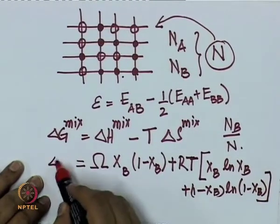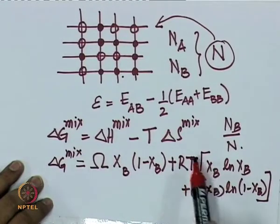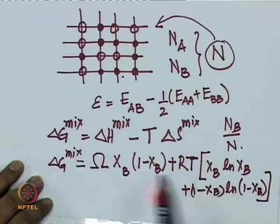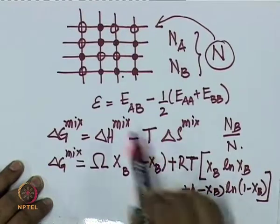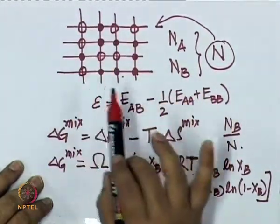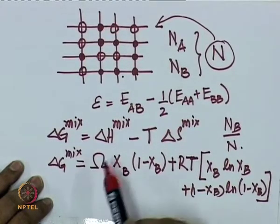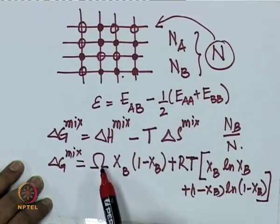From this expression we argued that at higher temperatures, when the temperature-dependent term is dominant, the enthalpy of mixing doesn't play a key role. The system chooses a configuration dominated by entropy, and because entropy prefers random distribution, you form a random solid solution. At higher temperatures, irrespective of what omega is, it forms a random solution. There are three cases for omega: negative, positive, or zero.